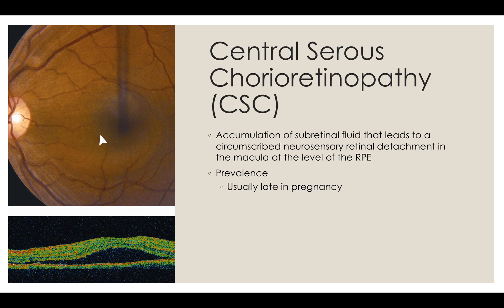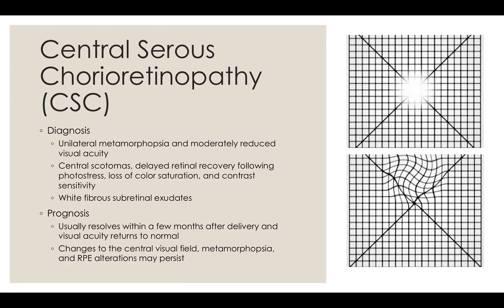Central serous chorioretinopathy, or CSC, is a disease unassociated with preeclampsia or eclampsia, but specific to pregnancy. Late in pregnancy, fluid accumulates subretinally within a circumscribed area in the macula at the level of the retinal pigment epithelium, forcing a neurosensory retinal detachment. The top image on the left shows the appearance of CSC; the bottom image is an optical coherence tomogram demonstrating subretinal fluid. Women experiencing CSC report moderately reduced visual acuity and unilateral metamorphopsia — a type of distorted vision in which a grid of straight lines appears wavy and parts of the grid may appear blank. Additional manifestations include central scotomas, delayed retinal recovery following photostress, loss of color saturation, and contrast sensitivity. On the right are examples of how the Amsler grid appears to a patient so affected: the top shows central scotoma, and the bottom, metamorphopsia.